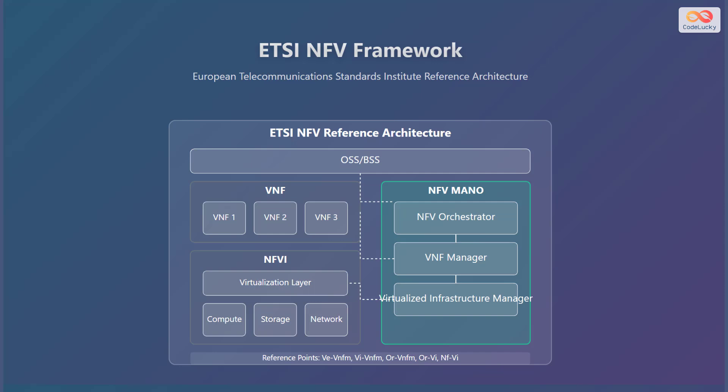The virtual network function block contains the actual virtualized network functions. The NFV infrastructure block provides the physical resources, such as compute, storage, and network, and the virtualization layer. There are also several reference points defined within the ETSI-NFV framework.